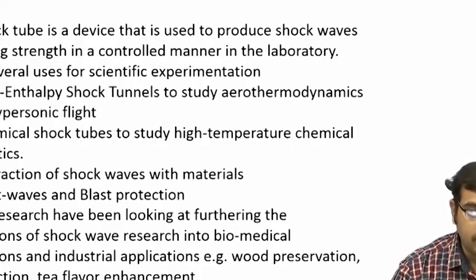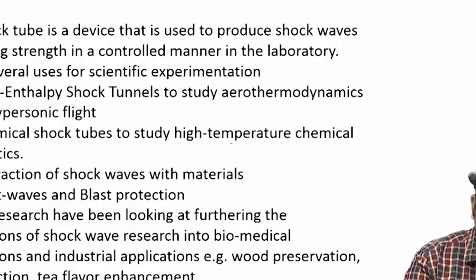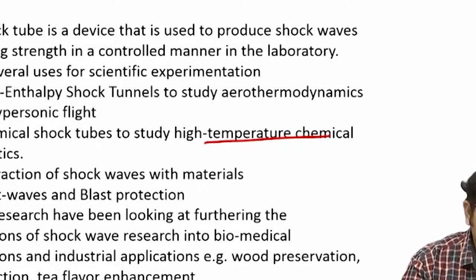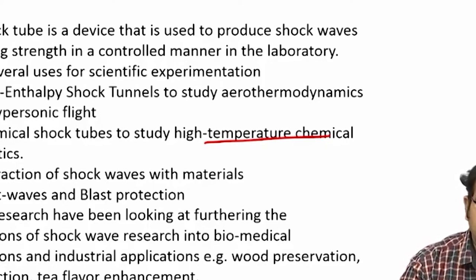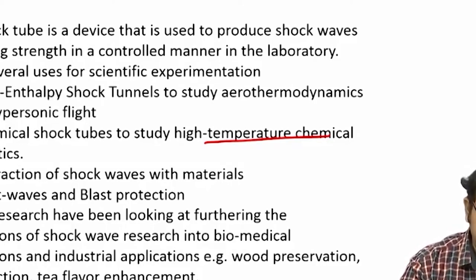We know that when Mach number increases tremendously, the stagnation temperatures and pressures also increase significantly. Shock tubes are one way to produce such high pressures and temperatures. They are also used to study high-temperature chemical kinetics — how reactions happen at high temperatures — and they have various applications to study the interaction of shock waves with materials or structures. This is relevant to blast waves, since shock waves are also produced during an explosion event, and shock tubes allow study of how that affects structures in a controlled manner in the laboratory.